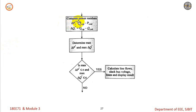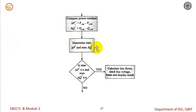Once we compute the power residues delta P_i and delta Q_i, we need to determine the maximum of delta P_i for the r-th iteration and the maximum of delta Q_i for the r-th iteration.